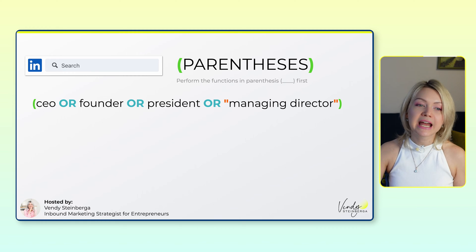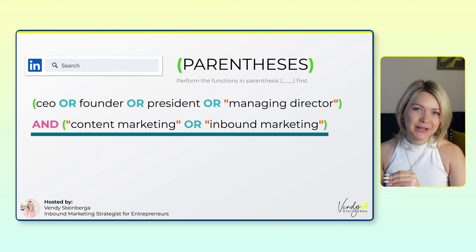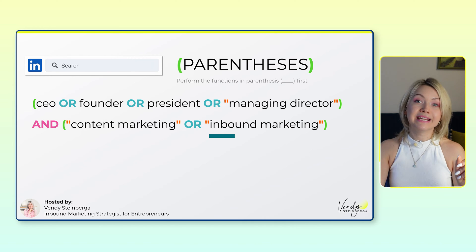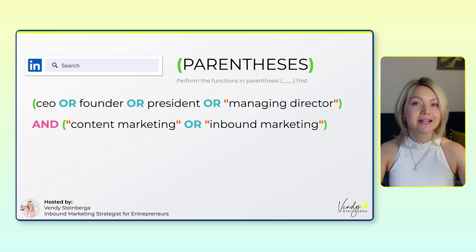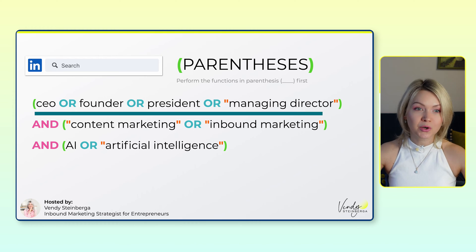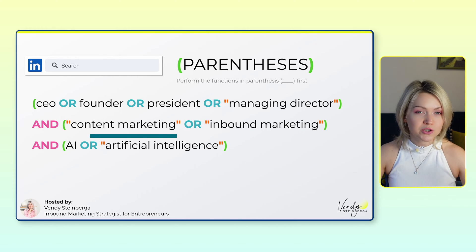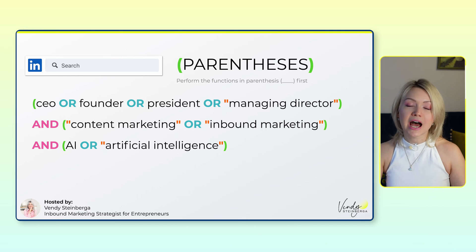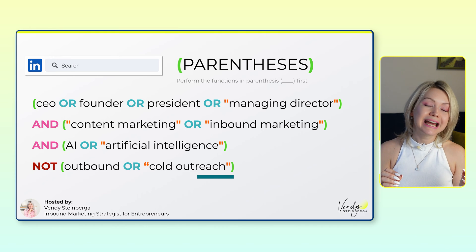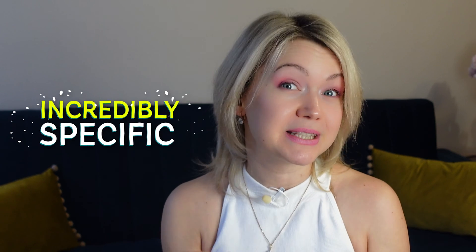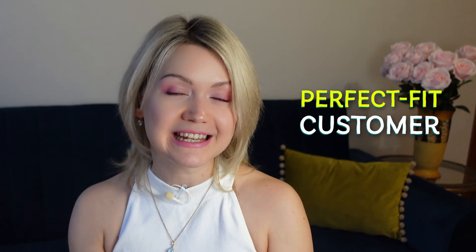That's one thing. Then I'm saying AND ("content marketing" OR "inbound marketing"). So I want them to be entrepreneurs or CEOs who are specializing in either content marketing or inbound marketing. And then I can layer this even further — AND (AI OR "artificial intelligence"). So this person has to be a business owner who is specializing in content marketing and also in AI. Then at the end I would say NOT (outbound OR "cold outreach") — so if those two keywords are somewhere in a profile, it's not going to be delivered in the results. You can see how you can get incredibly specific with your searches to really find the perfect fit customer on LinkedIn. So let's head over to LinkedIn.